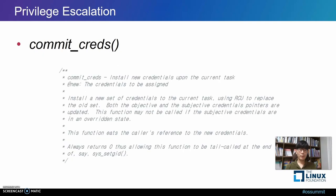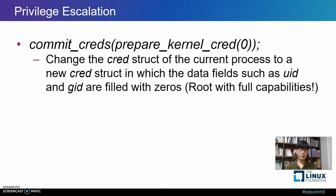The commit_creds function must be called to update the process's credential. That function is responsible for installing new credentials into the current process. The process refers to a new credential structure through the RCU (Read-Copy-Update) method. The reference count is decremented while referencing the newly created credential structure and releasing the previously referenced credential structure. This single line of code is well known to be used by attackers. Many exploit codes get root permission by executing that code.